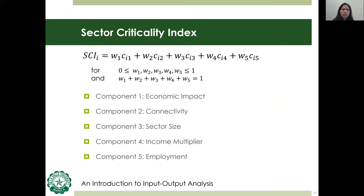To ensure that the SCI achieves desirable properties of an index — proportionality, circularity, determinate, dimensionless, and reversible — a normalization method is implemented for each component. This ensures that results are consistent and compatible.